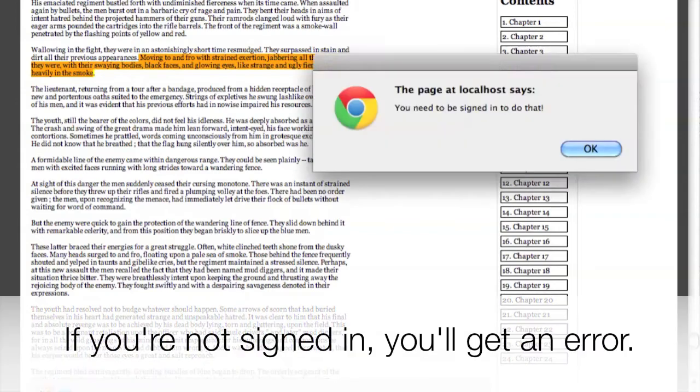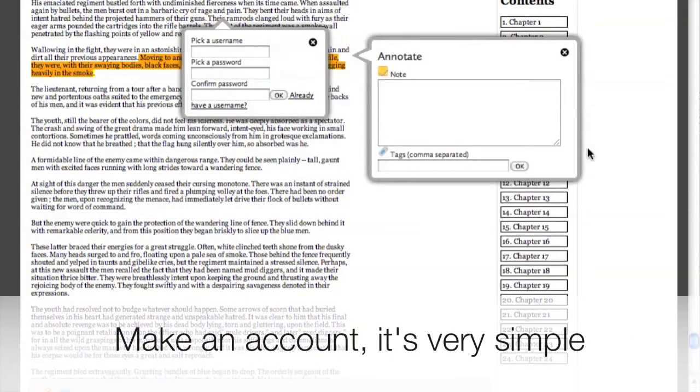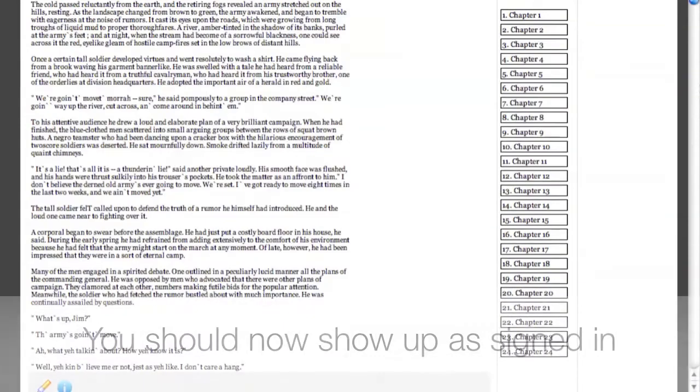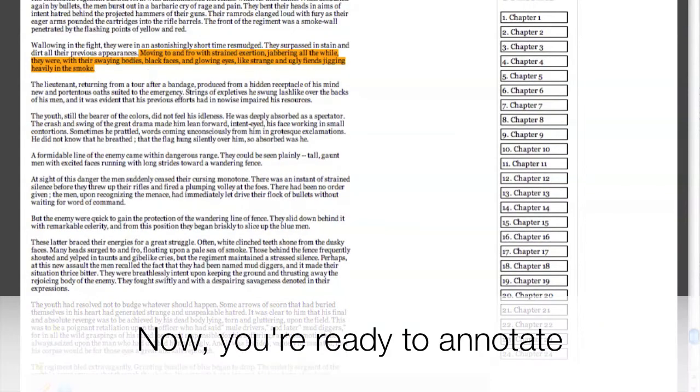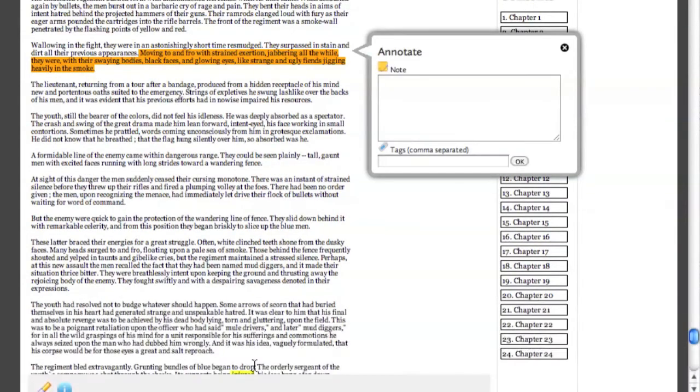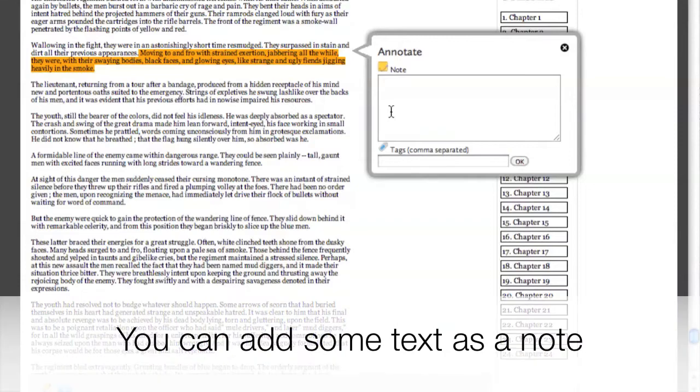Click the highlighter button at the bottom left to make a note. If you're not signed in, you'll get an error. Simply sign in by picking a username. After you do so, you should appear as signed in.